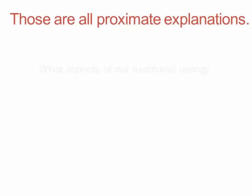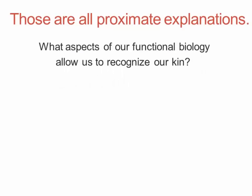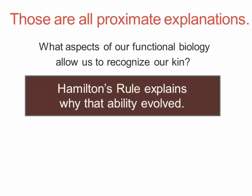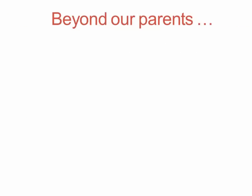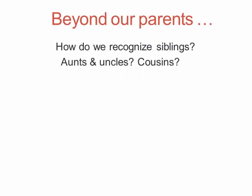All of those are proximate explanations — they answer the question of what aspects of our functional biology allow us to recognize our kin. In an evolutionary sense, Hamilton's rule is an ultimate explanation because it's an attempt to explain why kin recognition would have evolved in the first place and how it would have given a reproductive advantage. Beyond our parents, there's the whole problem of how we recognize siblings, the siblings of our parents, the offspring of those siblings, our grandparents, and so on.